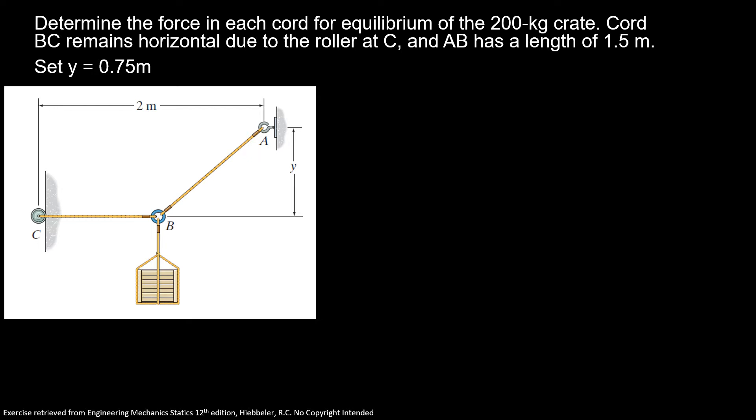This problem is the first step that we're gonna do in our equilibrium, is a very basic problem. Determine the force in each cord for equilibrium of a 200 kilogram crate. Cord BC remains horizontal due to the roller at C, and AB has a length of 1.5 meters. Set y equals 0.75 meters.